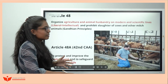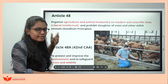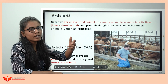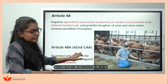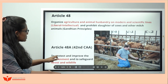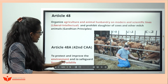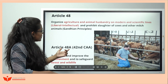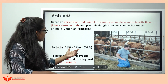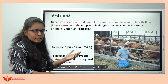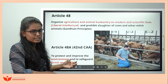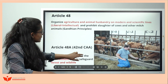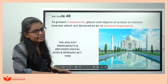Article 48 — gated animals — is related to organized agriculture and animal husbandry on modern scientific lines. It's Liberal Intellectual, but Gandhi also said prohibit slaughter of cows — so it has both principles. Article 48A was added later through the 42nd Constitutional Amendment to protect and improve the environment and safeguard forests and wildlife — this came after the Wildlife Protection Act of 1972-73.